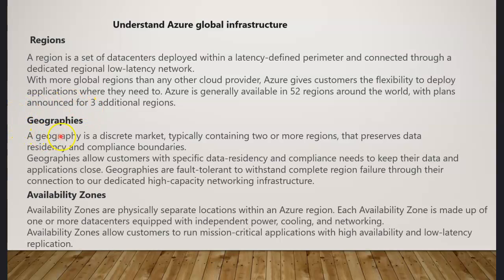A geography is a discrete market — it's more about the data. Typically, a geography contains two or more regions, not just one. It preserves data residency and compliance requirements, so when they go for compliance certification with auditors, they talk about boundary lines defining where the data will exist. For example, a geography ensures Canadian government data doesn't go into the US.